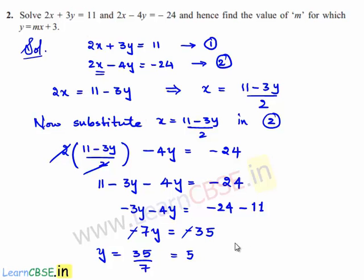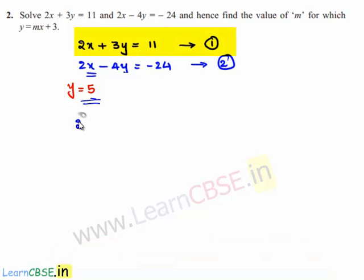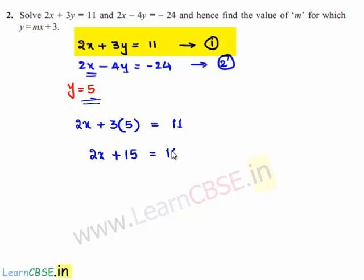Therefore we found one solution: y is equal to 5. Now let us substitute y is equal to 5 in equation number 1. We get 2x plus 3 times of 5 is equal to 11, and 3 times 5 is 15.